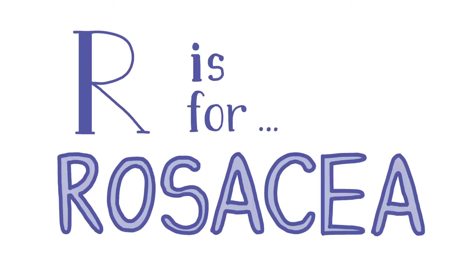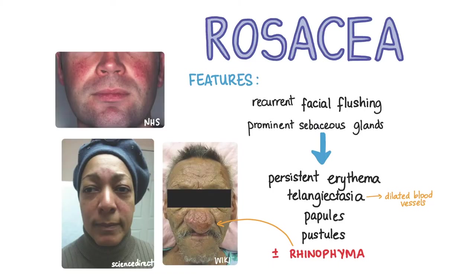R is for rosacea. Rosacea is a chronic relapsing inflammatory skin condition characterized by recurrent episodes of facial flushing in the initial stages, later associated with persistent erythema, telangiectasia, papules and pustules. In severe cases the nose develops a large bulky shape, known as rhinophyma. Rosacea is caused by increased reactivity of the capillaries to heat, causing flushing and eventually telangiectasia. Sebaceous glands are prominent, yet unlike acne the skin is dry and not greasy and there are no comedones.